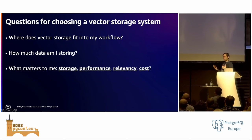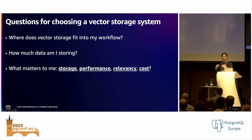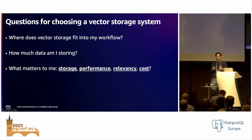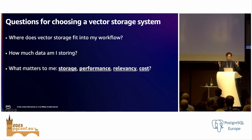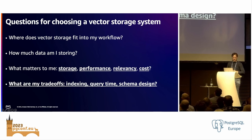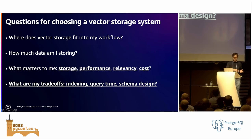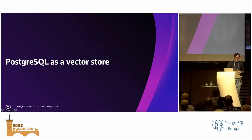There are four properties that are always going to be at tension with each other when you commit to a vector storage system: storage, performance, cost, and relevancy. You might need to pay more to get the performance you want, or sacrifice relevancy by using more aggressive approximate nearest neighbor techniques. Once you figure out what matters most to you, you have to figure out your trade-offs — what are your index build parameters, what exact query time are you looking for, and this can impact your schema design. One of the reasons we're all here is we want to understand where Postgres fits in as a vector store. A vector is just a data type with well-defined properties, and Postgres is very good at dealing with data types of well-defined properties.